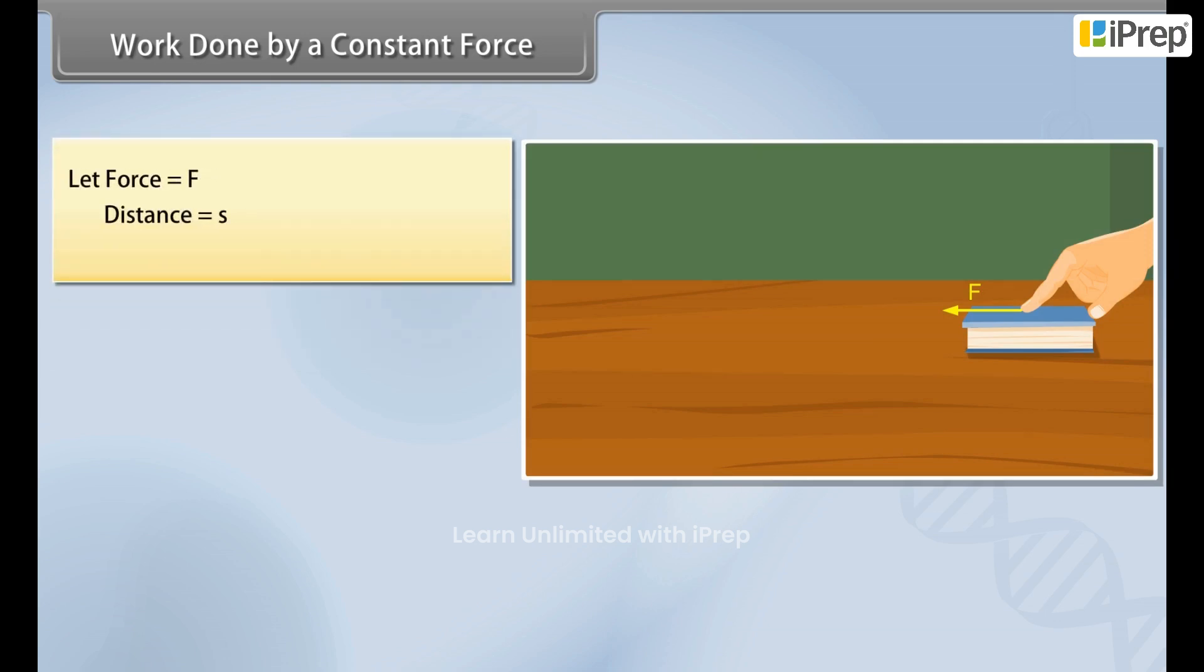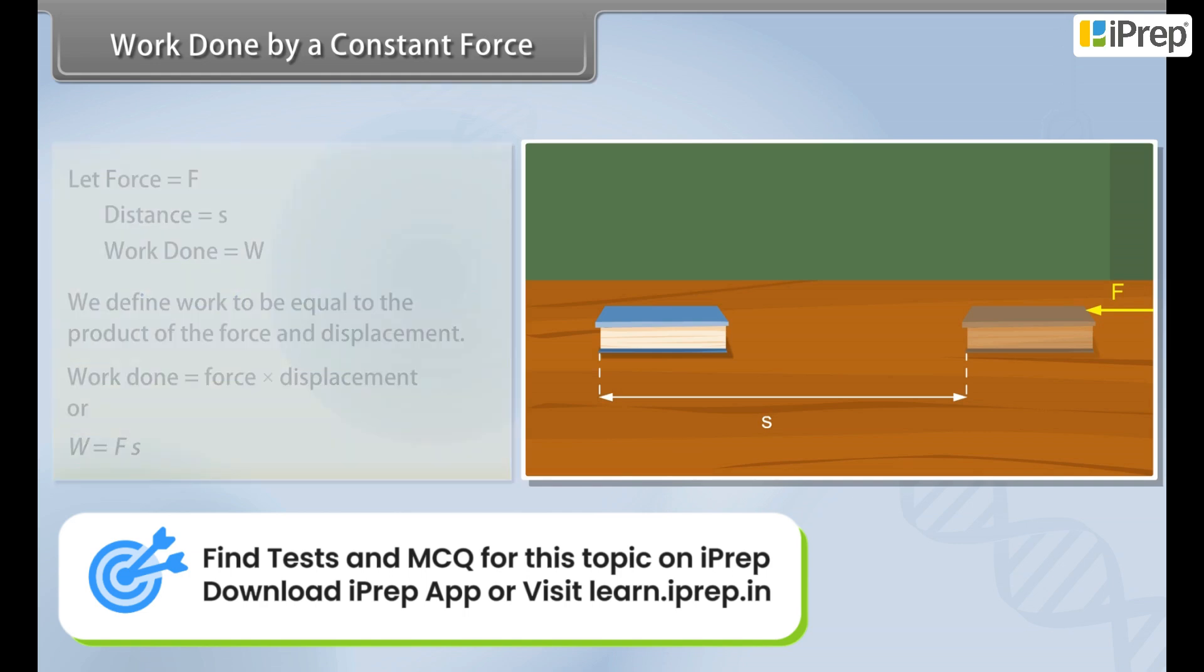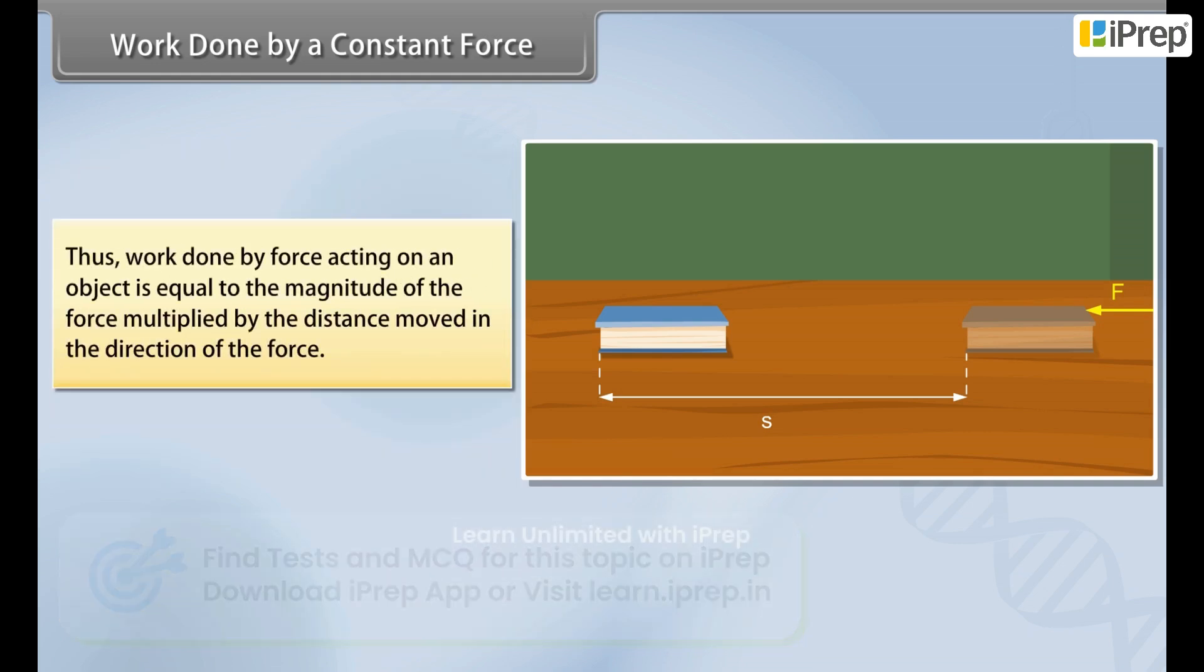Let the object be displaced through a distance s in the direction of the force. Let W be the work done. We define work to be equal to the product of the force and displacement. Work done is equal to force into displacement, or W is equal to F into s.